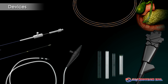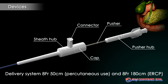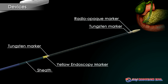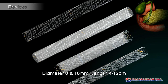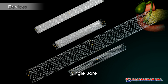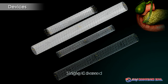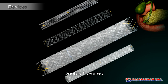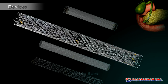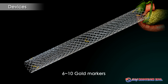Required devices for endoscopic biliary stent replacements are an ERCP catheter, guide wire, and a delivery system with a biliary stent. There are four types of Aegis Biliary Stents. The most popular stent is the double bare Aegis due to its excellent flexibility and conformability and reduced shortening on deployment. Tubular gold markers on the stent increase radiopacity and visibility on fluoroscopy.